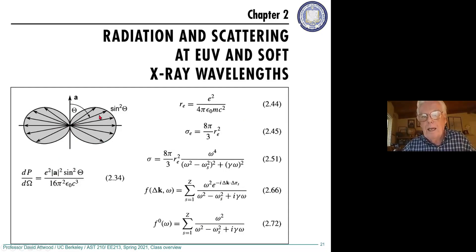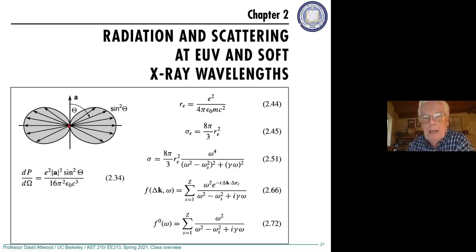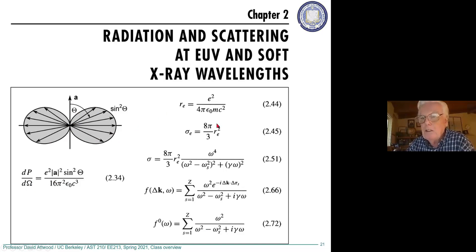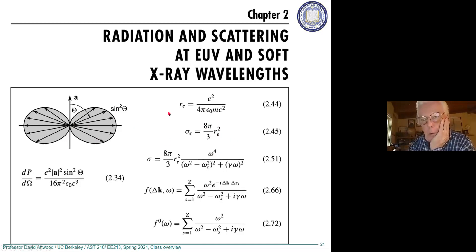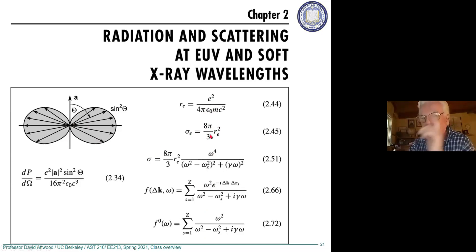If you have a single charge with an electric field making it oscillate up and down, it's going to radiate a dipole pattern — a sine-squared pattern, which looks like a donut in 3D. The power radiated by an accelerated charge depends on the magnitude of acceleration squared and this angular distribution, giving you power per unit solid angle radiated. This is a famous formula in electromagnetics that applies equally to a single oscillating electron or a radio antenna.